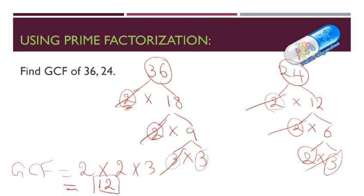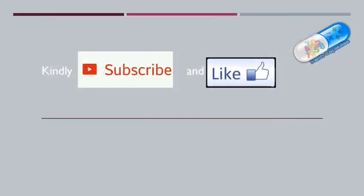Let us check this. Is 36 divisible by 12? Yes, because 12 times 3 is 36. Is 24 divisible by 12? Yes, because 12 times 2 is 24. And 12 is the greatest common factor between 36 and 24. Hope you understand. Please kindly subscribe and like my video. Bye.